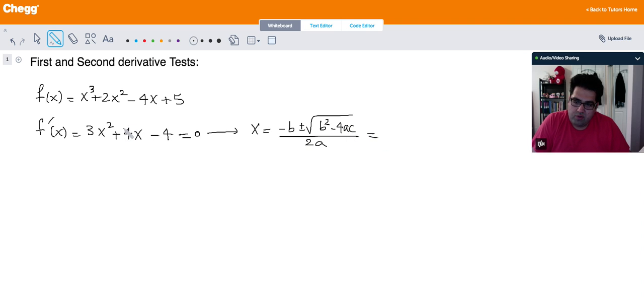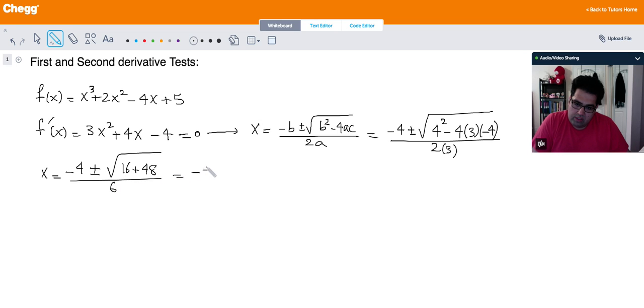The b is 4, a is 3, and c is negative 4. So if I plug into this formula, I would get negative 4 plus minus square root of 4 squared minus 4 times 3 times negative 4, all over 2 times 3. Here is 16. 4 times 3 is 12. 12 times 4 is going to be 48.